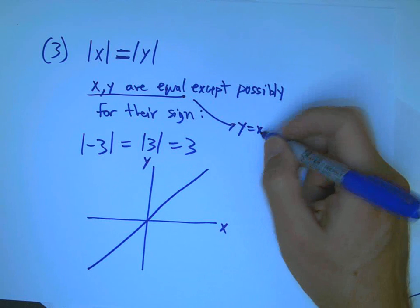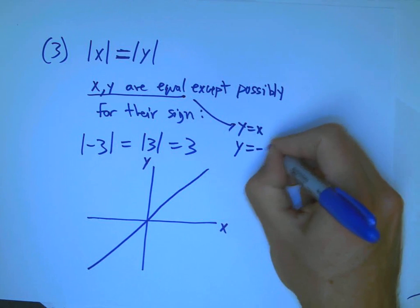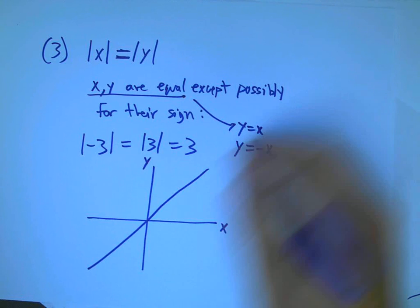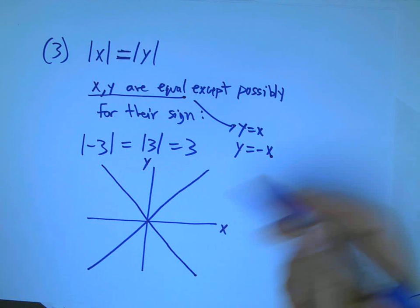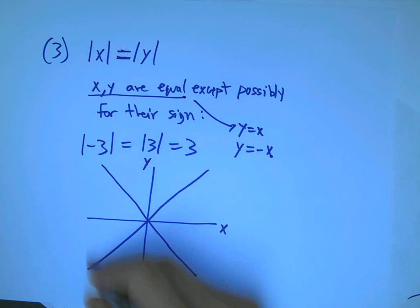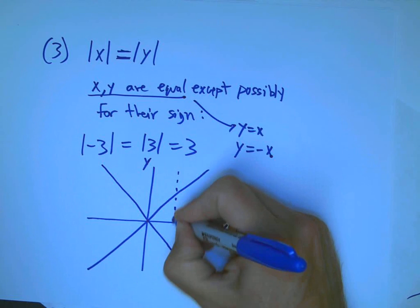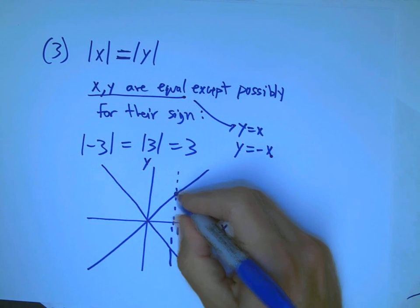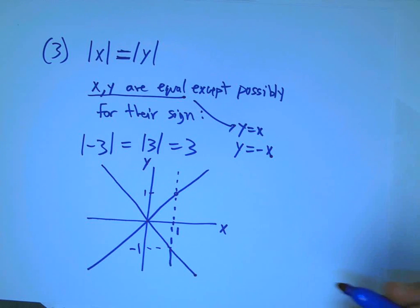But there's two possibilities here. x and y could be equal. That would be y equals x. We know what that looks like. It's one of the simplest straight lines. Or, they could be like this. They could be exactly opposite. y is minus x. Well, that's a line through the origin again, but with slope minus 1. Okay, so there's the graph. It's both of these lines together.